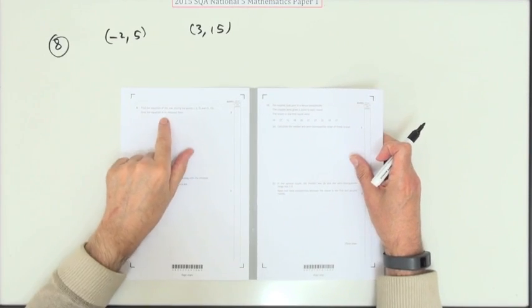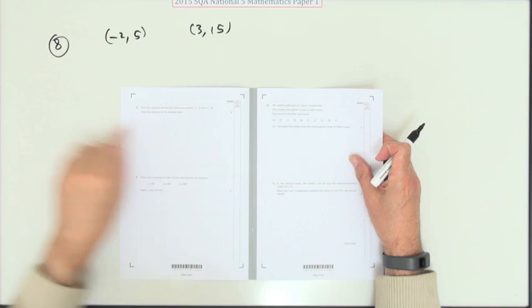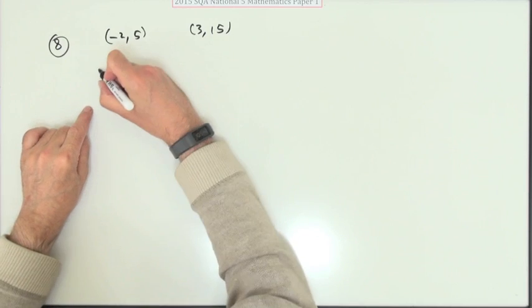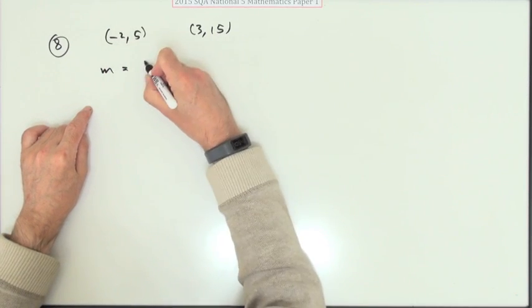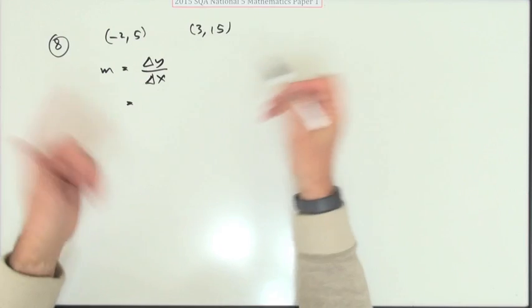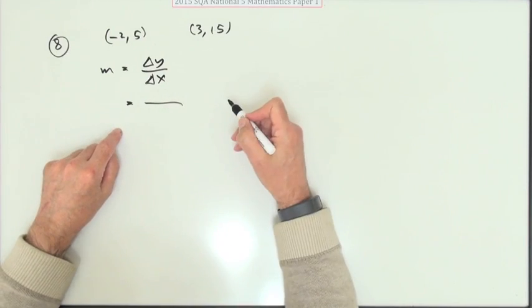Eight. Find the equation of the line joining these two points. Give the equation in its simplest form. Three marks. Well the first thing would be, what's the gradient? Well the gradient would be the difference in the y-coordinates over the difference in the x-coordinates. You'll probably write y2 minus y1, x2 minus x1. Because that's what it is.